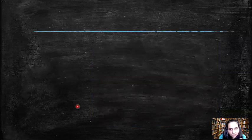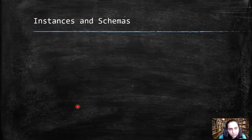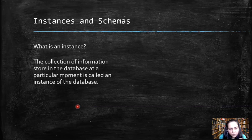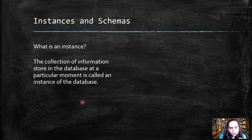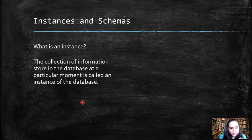Now let's move on to our last two topics: instances and schemas. What is an instance? An instance is a collection of information stored in the database at a particular moment. Whenever a database is created, it keeps changing — for example, a bank database changes every time a person makes a transaction. An instance is kind of a picture of the data; like a photograph, it captures a still, stationary image. So whatever information is captured at that moment is called an instance.